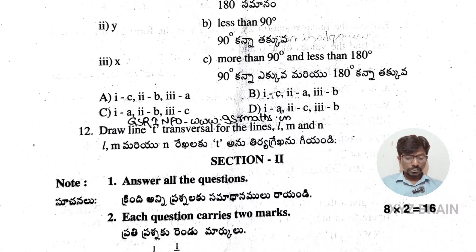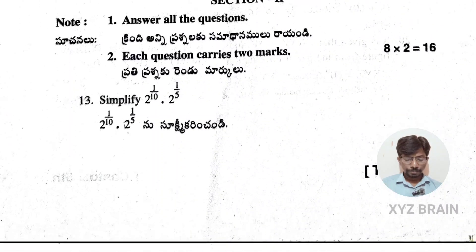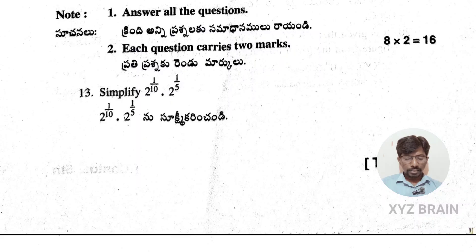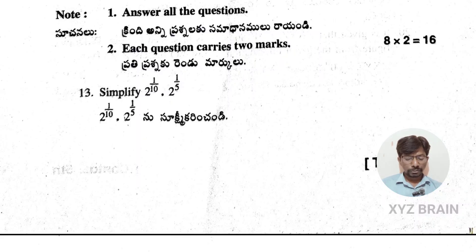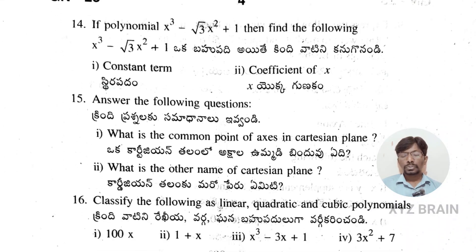Section 2, each question worth 2 marks. Question 13: simplify 2 to the power of (1/10) multiplied by 2 to the power of (1/5). Question 14: if the volume is x³ - √3x² + 1, find the following.